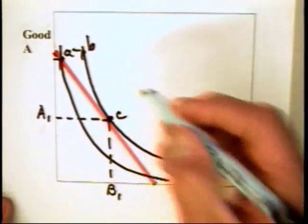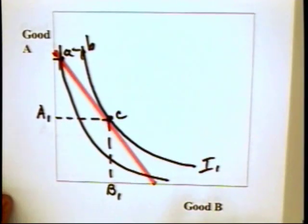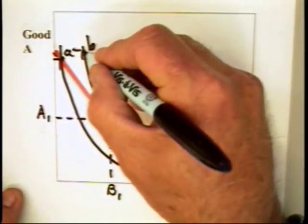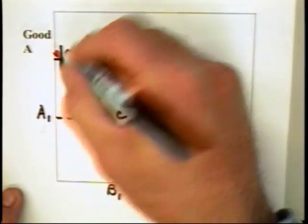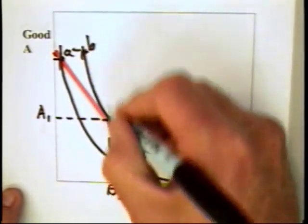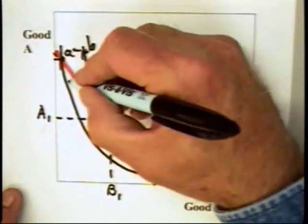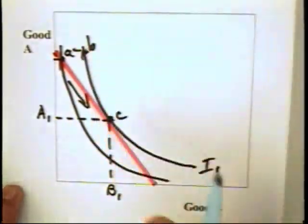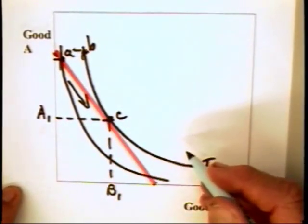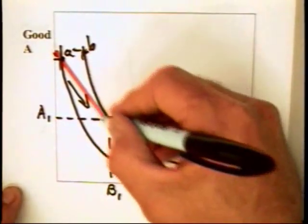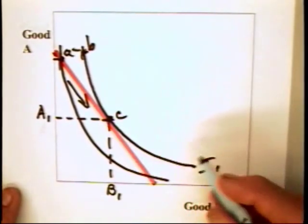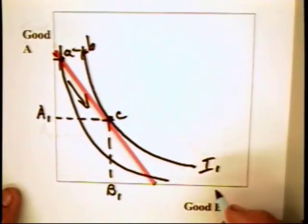We know that combination C is on the same indifference curve as B. Therefore, since B is of greater value than A, and C is of equal value to B, then C must be preferred to A. The individual will move from A to C. The individual will not move down the budget constraint because he or she will be moving to a lower indifference curve.